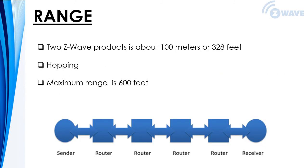Z-Wave is intended for wireless home control applications. Z-Wave radio networking is designed for relatively few nodes that communicate on an average of 5 to 15 minutes. Without any obstacles such as walls and furniture, the range between two Z-Wave products is about 100 meters or 328 feet. When there are obstacles in your home that reduce that range, Z-Wave's mesh networking allows a Z-Wave signal to hop through all the Z-Wave products to reach the destination device that is to be controlled.